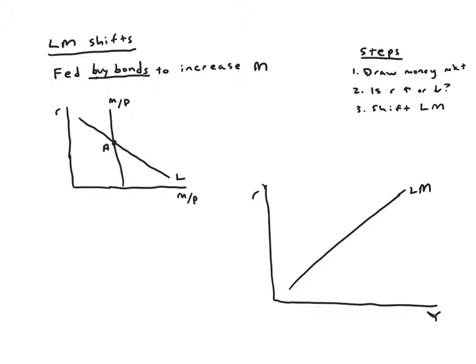Now the event takes place, the Fed buys bonds to increase m. That means m over p increases too so that shifts the supply to the right. We'll say this is m over p prime. We can see that this leads to a new equilibrium point with a lower interest rate.